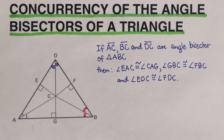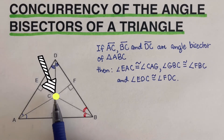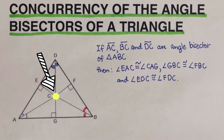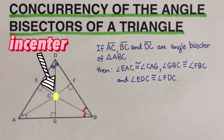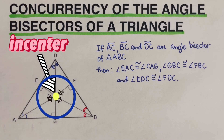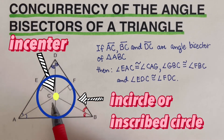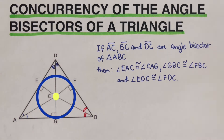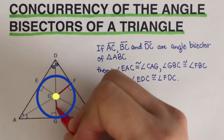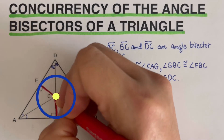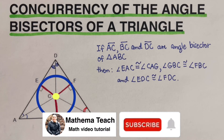This point of intersection — the point of concurrency — is called the incenter. It has a special name because it is actually the center of a circle that fits inside this triangle, called the incircle or inscribed circle. If we draw the angle bisectors and look at the incenter, and then draw lines perpendicular to the sides of the triangle, those perpendicular lines are the radii of the incircle, coming from the incenter.